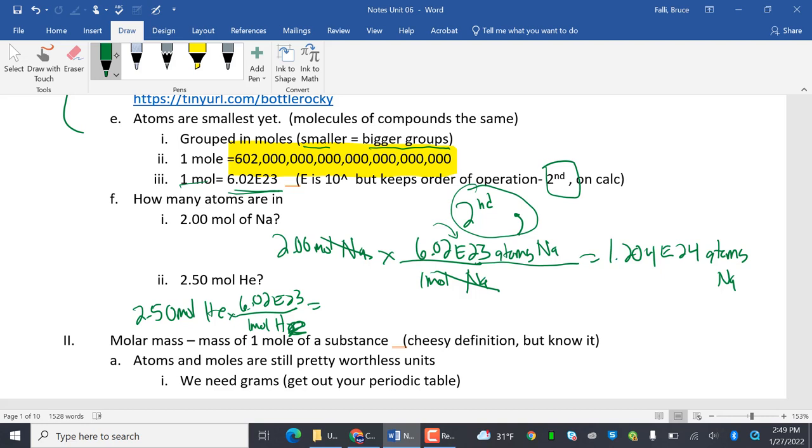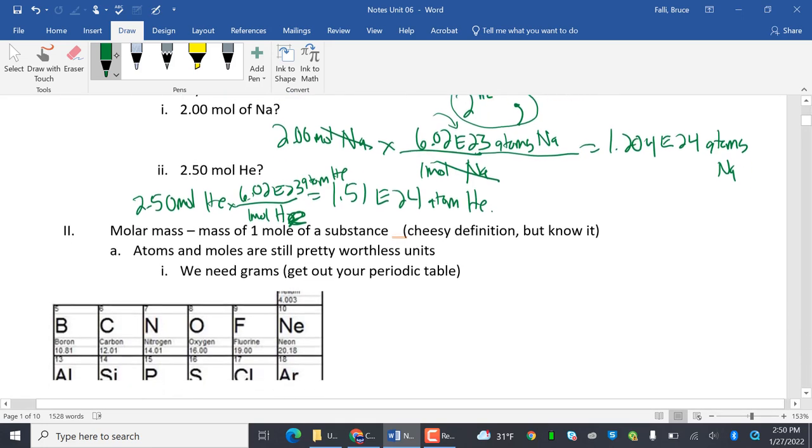2.5 moles of helium. I have 1 mole of helium. So notice 1 mole of any element or atom is going to equal 6.02 E23. So I'm going to actually get my calculator now. 2.5 times 6.02 second comma 23, enter, and I get 1.505. I'm just going to call it 1.51 E24 atoms of helium.